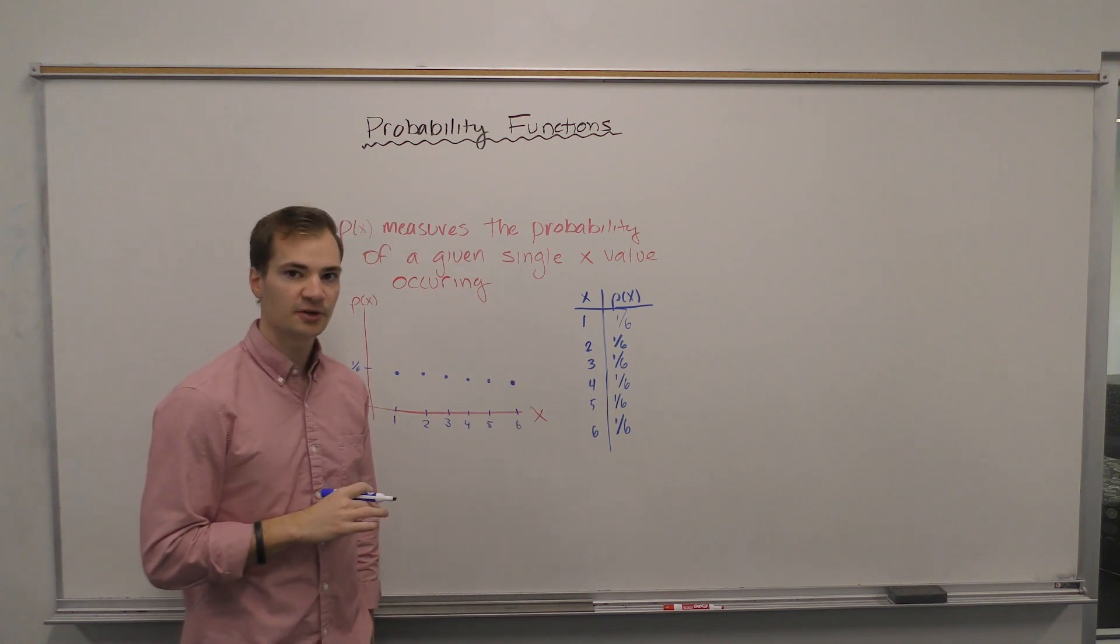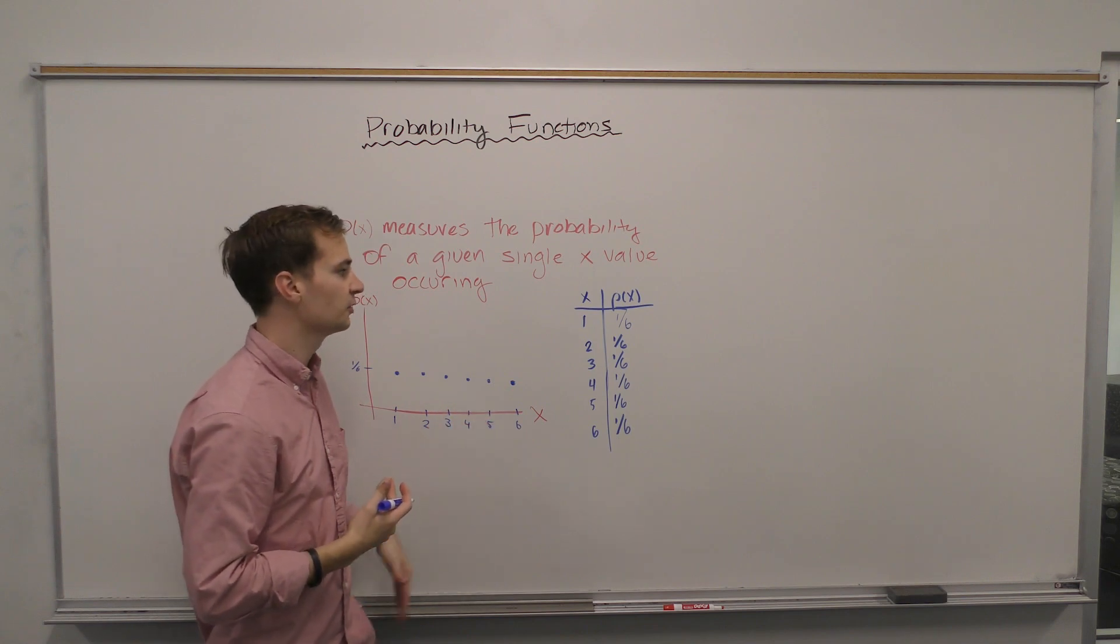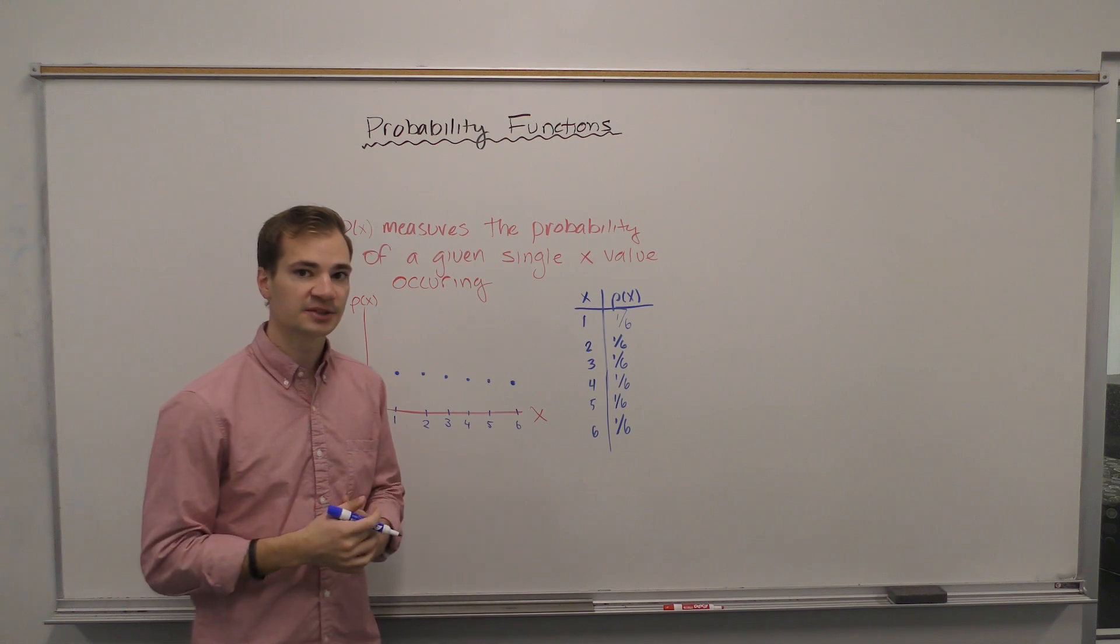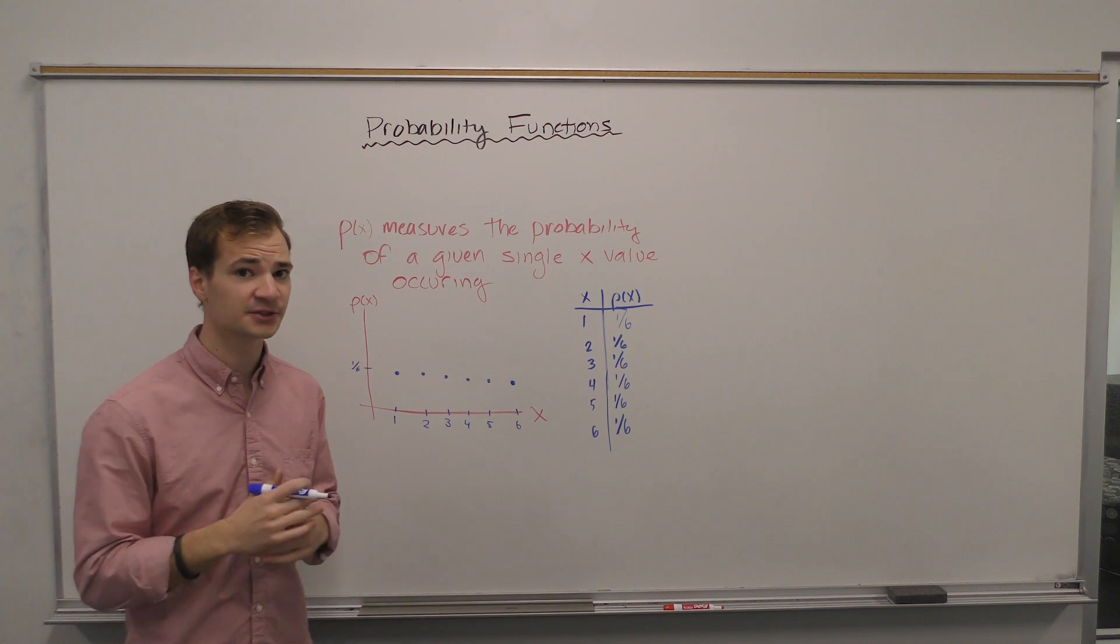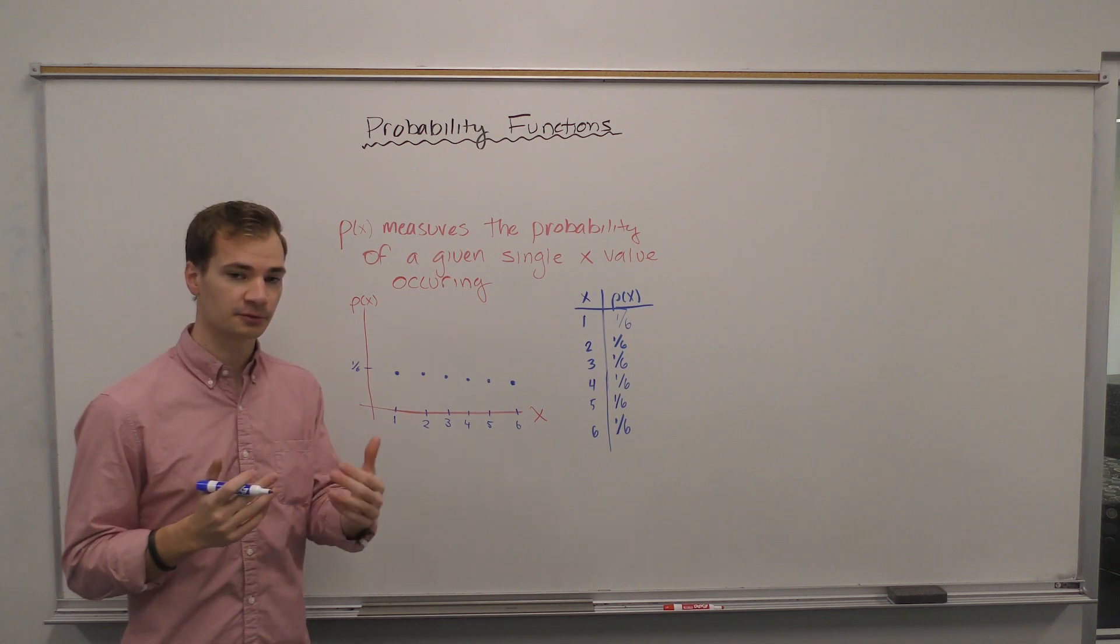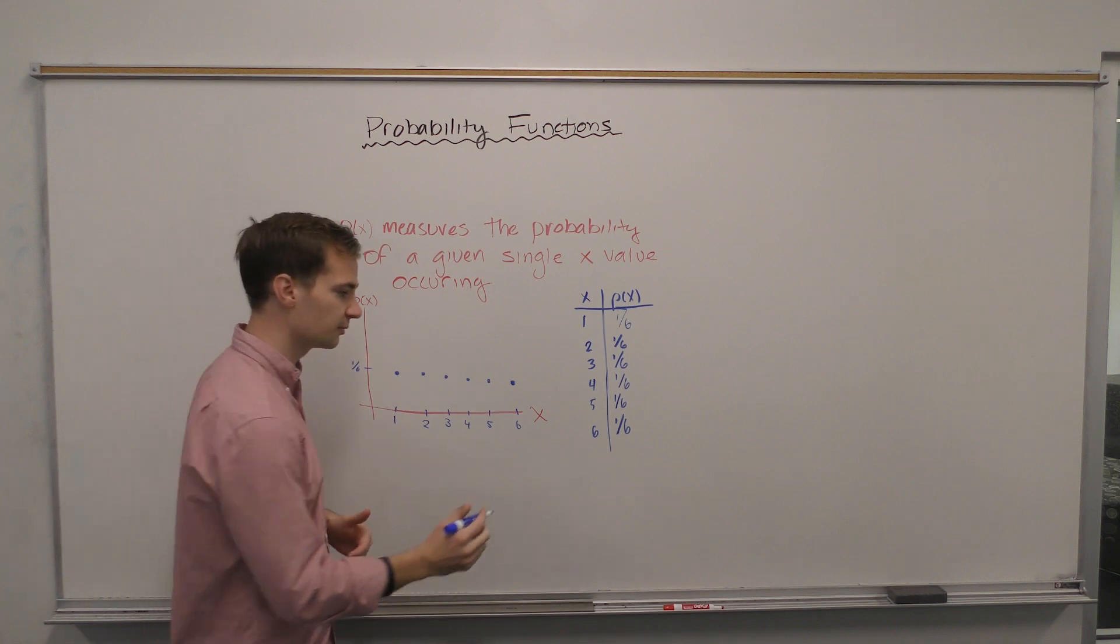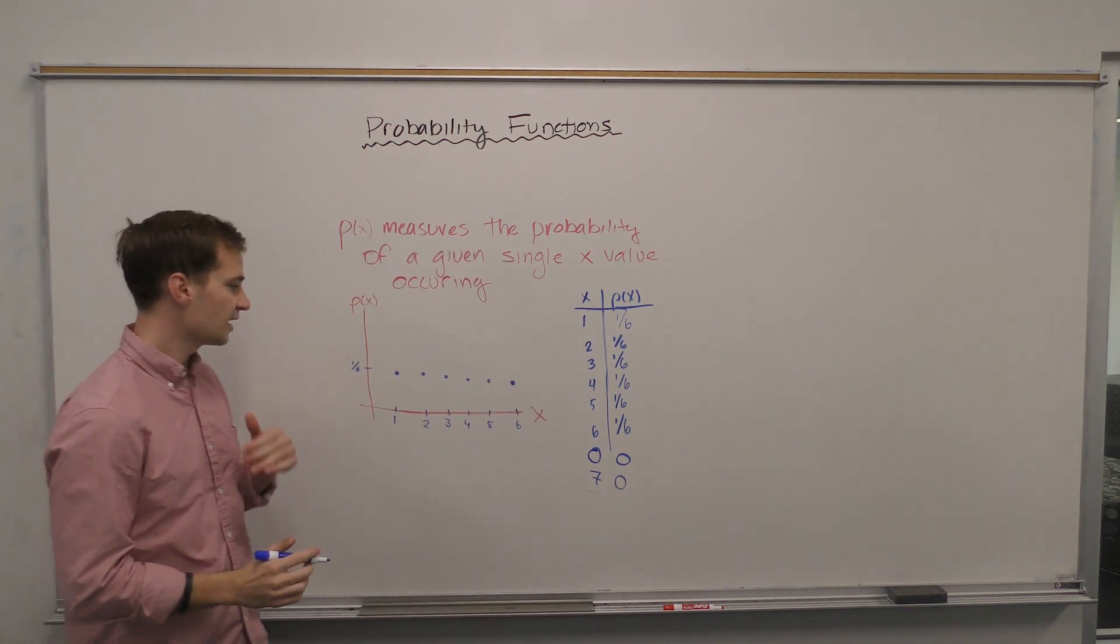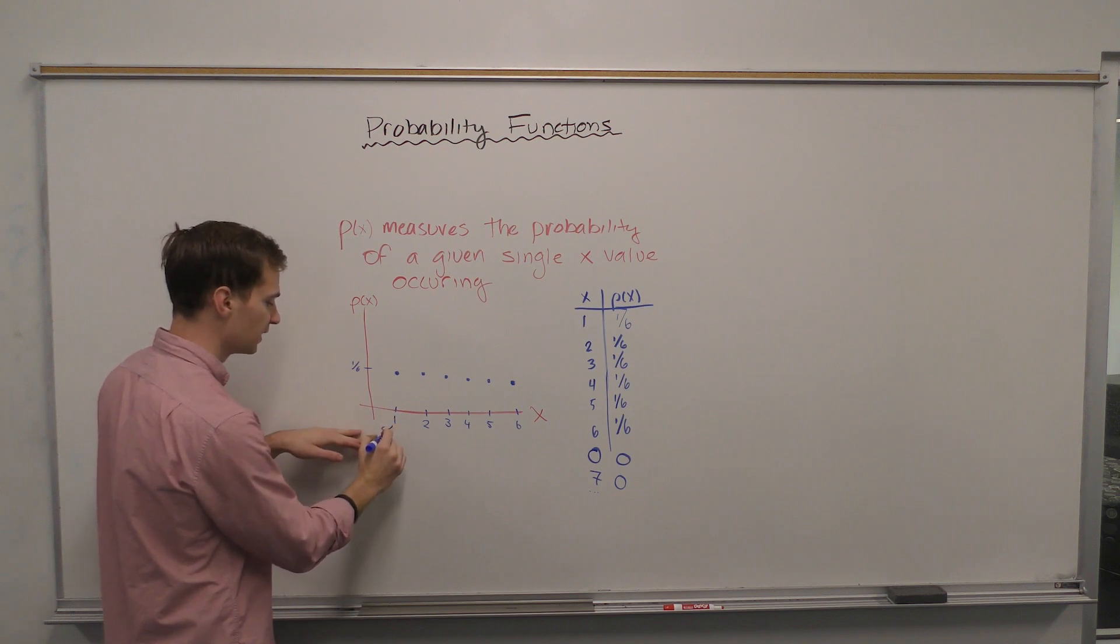Now it's important to note what will happen to our probabilities when we plug in a zero or seven. With this dice example, it's easy to see when we plug in a zero there is nothing—we cannot roll a zero. It's impossible to roll a zero, same with the seven. If we're rolling one die, it is impossible to roll a seven, so we can note that on here.